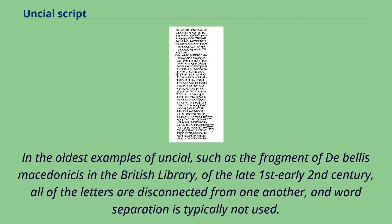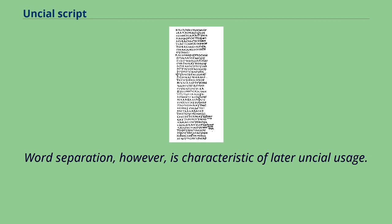In the oldest examples of Uncial, such as the fragment of De Bellis Macedonicus in the British Library of the late 1st to early 2nd century, all of the letters are disconnected from one another and word separation is typically not used. Word separation, however, is characteristic of later Uncial usage.